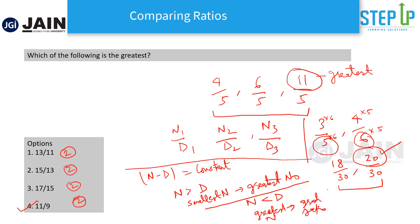So there are two methods we learned: one, equate the denominators by cross-multiplication and taking the LCM; two, when the difference between numerator and denominator is constant — if numerator is greater than denominator, the smallest numerator is the greatest ratio; if numerator is less than denominator, the greatest numerator is the greatest ratio. You can also always convert every ratio to decimal for a very simple comparison.